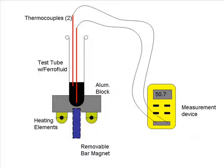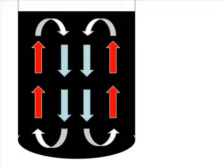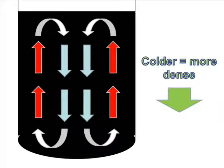The setup consisted of a test tube filled with ferrofluid, a heat source consisting of two power resistors mounted to an aluminum block, and two thermocouples hooked to an oscilloscope. The control experiment did not use a magnet. In this setup, convection occurs naturally. Hot liquid becomes less dense and rises, where it then cools and falls down again to be reheated.